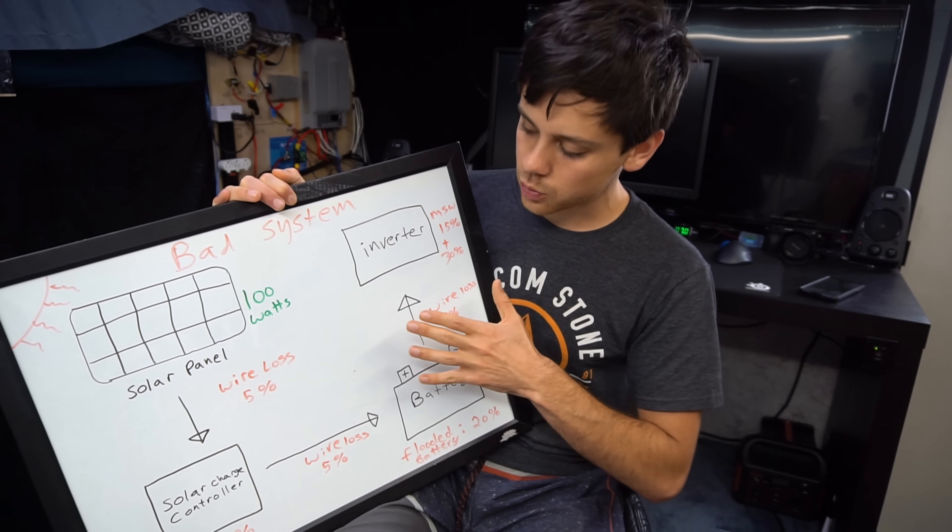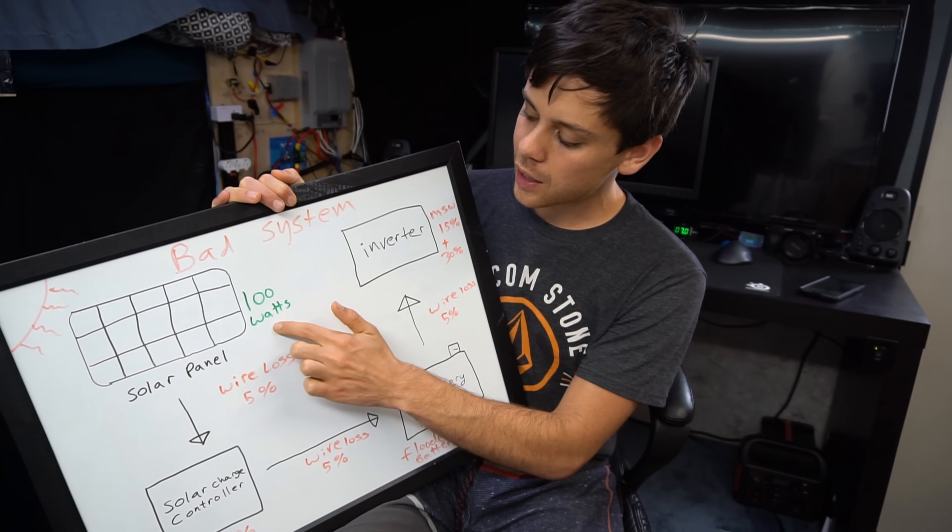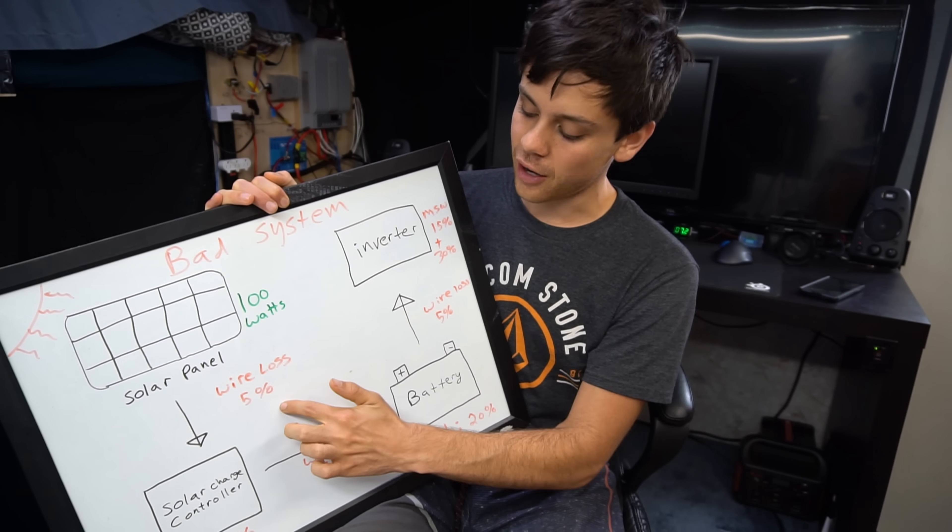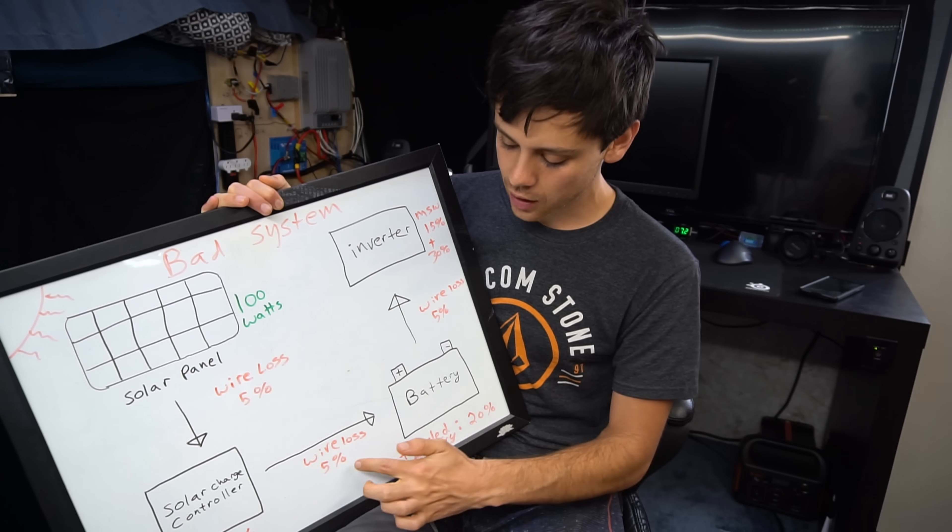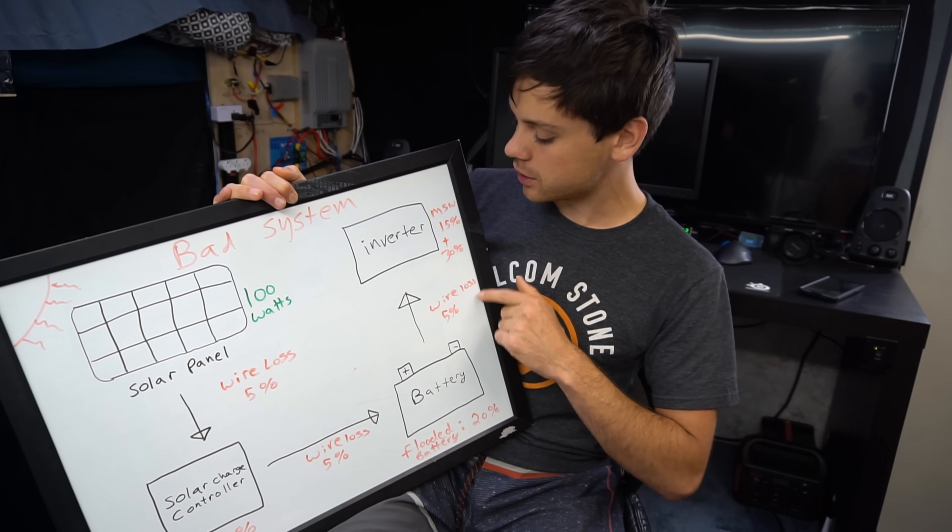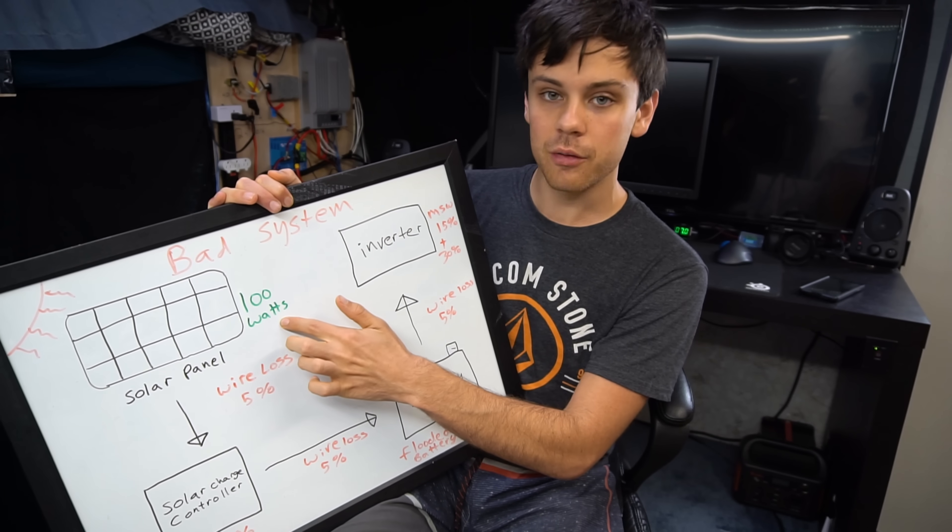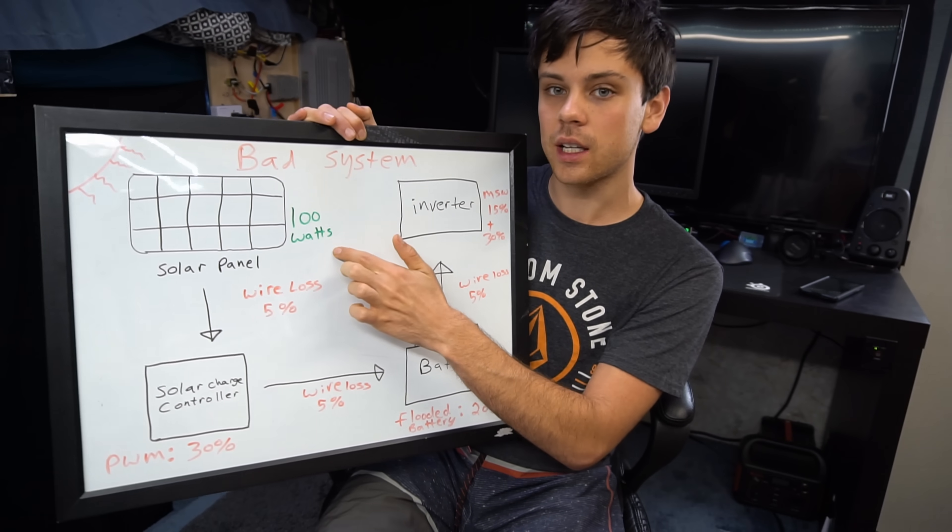All of these losses will tell us how much power we get out of that 100 watts. So we're going to take that 100 watts and calculate 5 percent loss, 30 percent loss, 5 percent loss, 20 percent loss, 5 percent loss, all the way throughout the steps and we will figure out how much of that 100 watts we actually get to use.